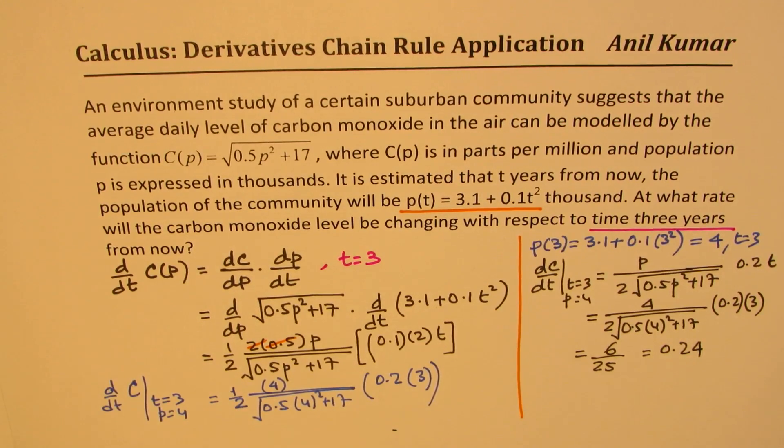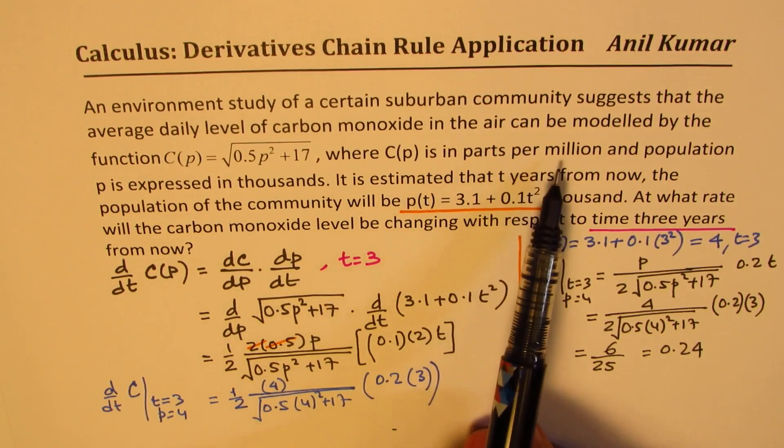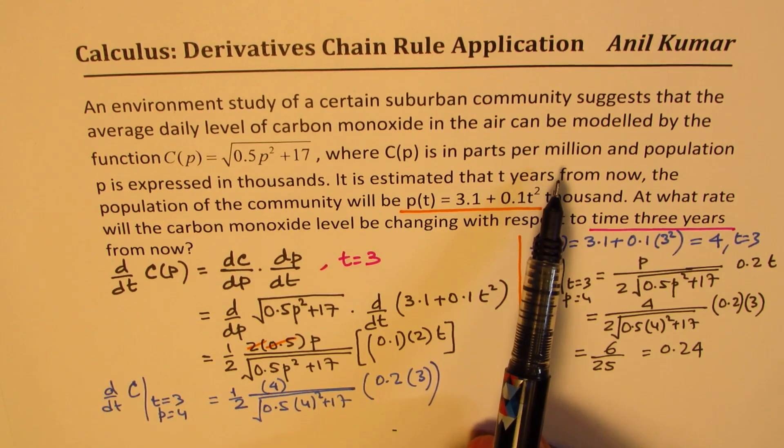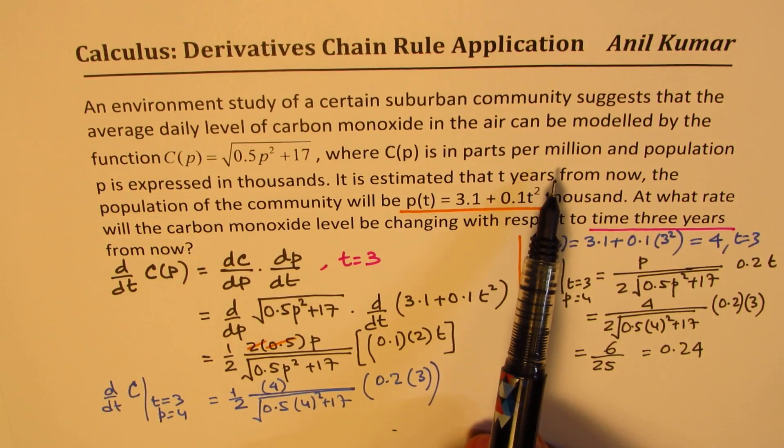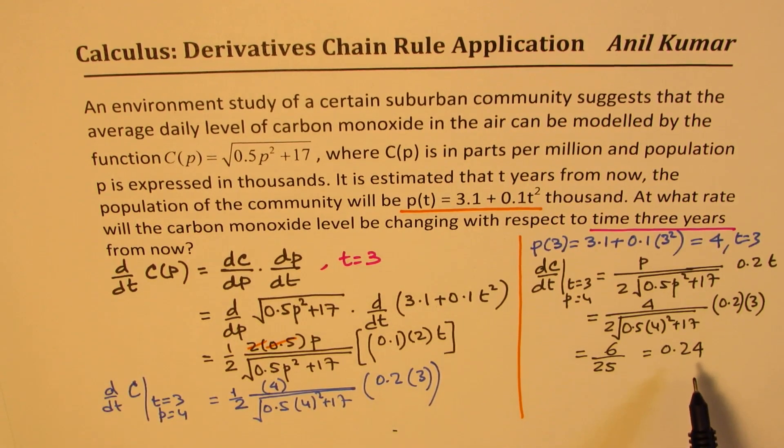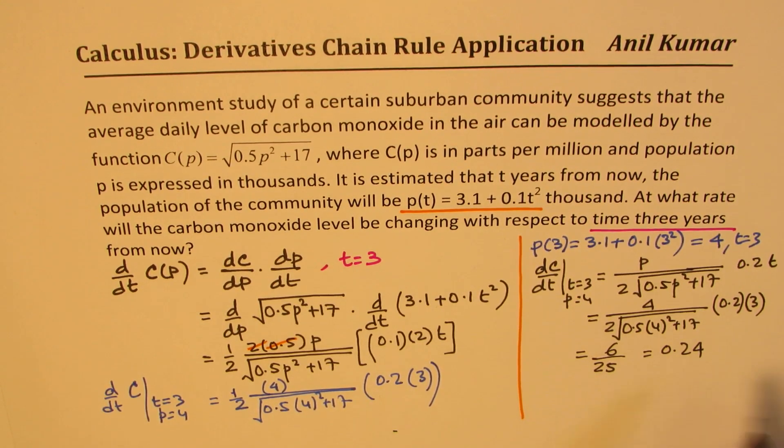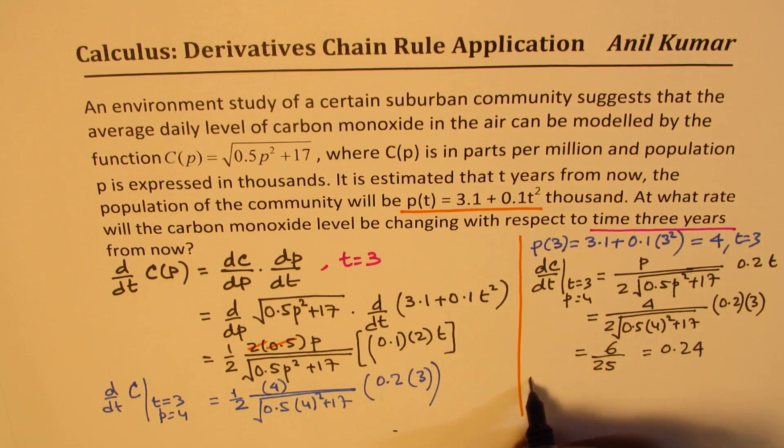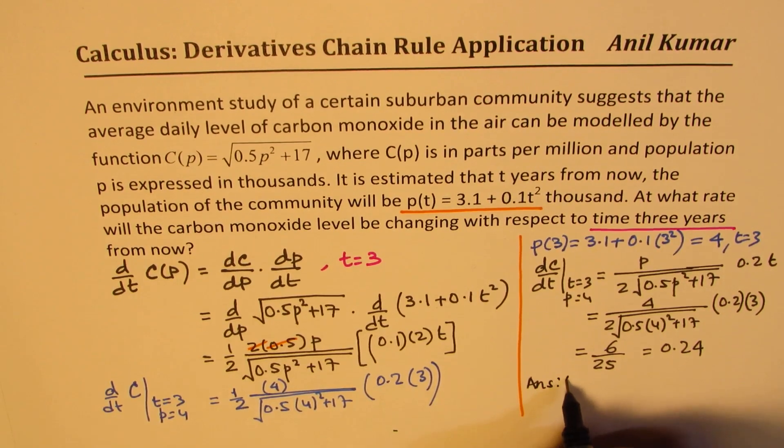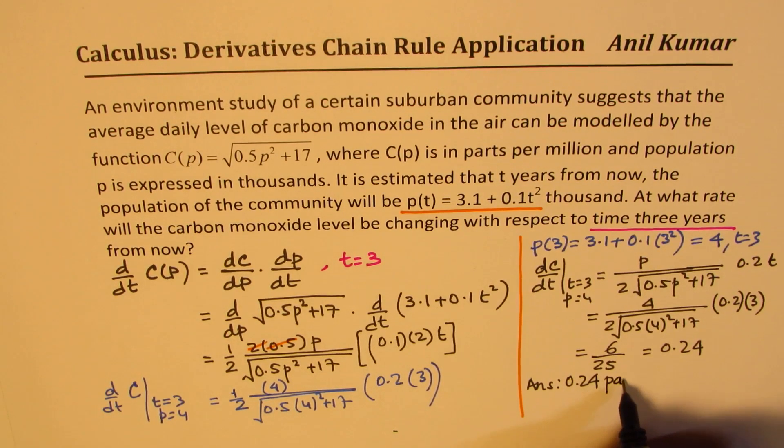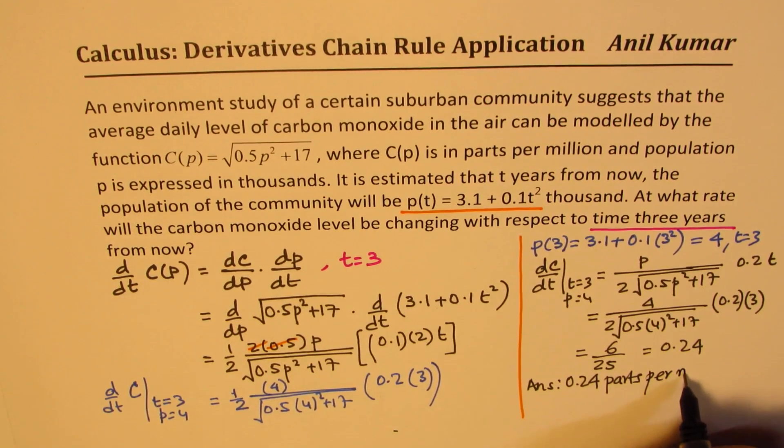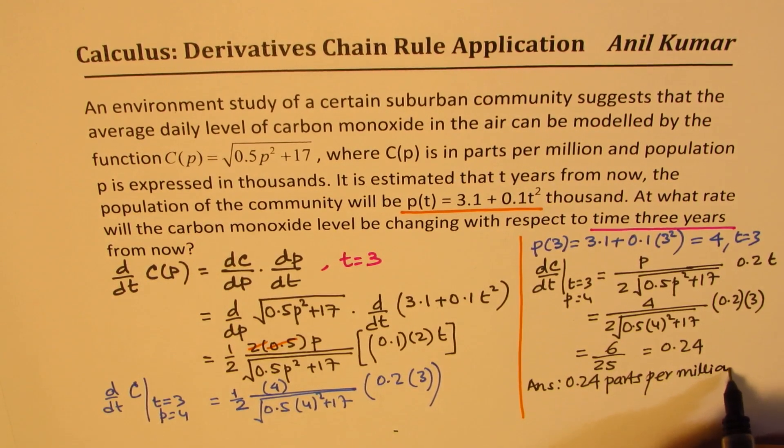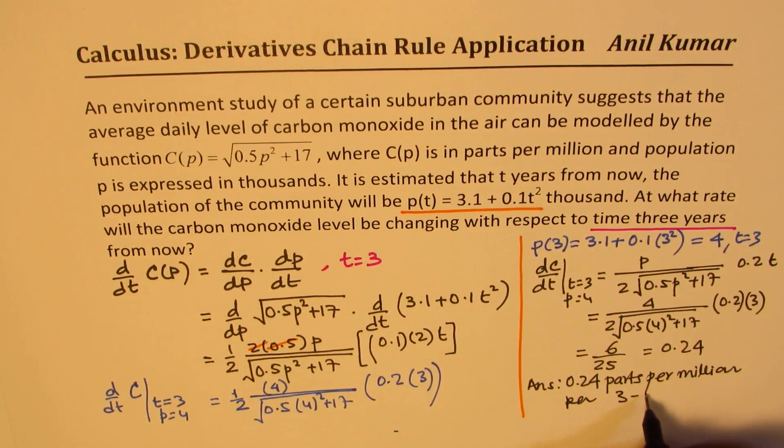Now the units are in parts per million. So those are the units which you have to mention here. So what we get here is a positive value. That means it is increasing at the rate of 0.24 parts per million per year. So our answer will be 0.24 parts per million per year.